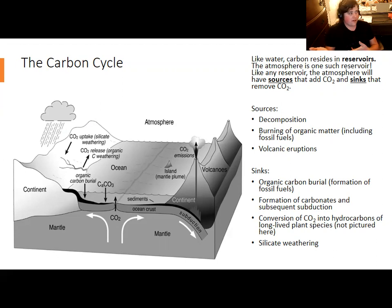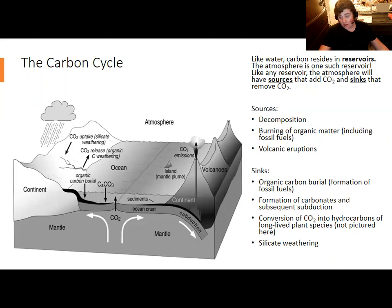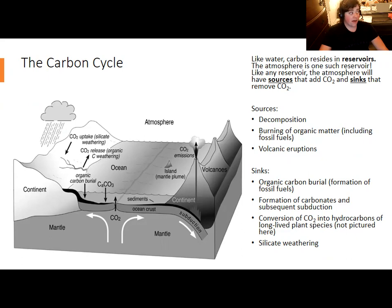Natural processes would eventually use up fossil fuels — for instance, if an oil field sits on a plate of oceanic crust, that plate will eventually subduct. But humans are digging it up far faster than that would happen naturally. Another sink is how CO2 dissolved in seawater undergoes a series of reactions to become the carbonate ion, which combines with calcium ions to form solid calcium carbonate — the substance coral reefs and snail shells are made of.